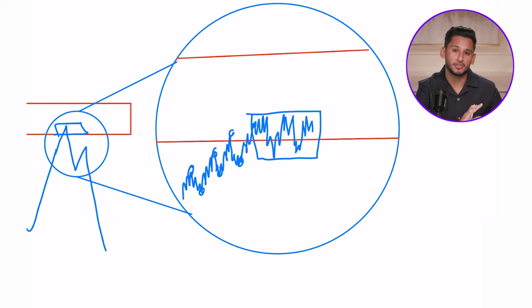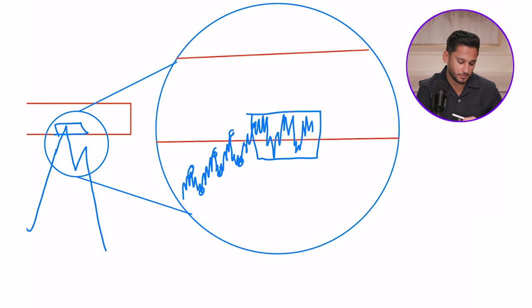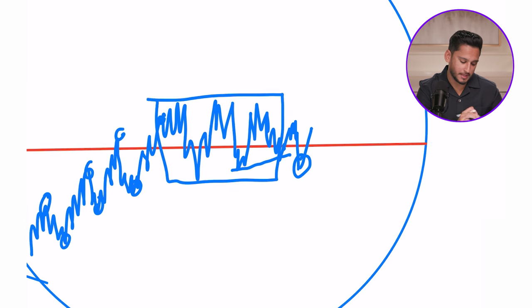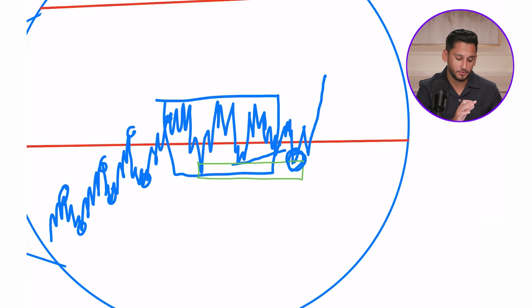If you can find a meaningful move, manipulation, and liquidity run — all of this displacement happening at a meaningful time — you've added a lot more context and precision accuracy, leading to better win rate, better quality setups, and you'll take the real moves and be less likely to take fake moves. Smart money traders are seeing that buildup, those equal highs. Then what you might see is Frankfurt Open doing an inducement of that level — using that run of liquidity to mitigate a demand area, grabbing some liquidity, doing the inducement, and then shooting out.